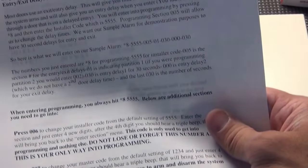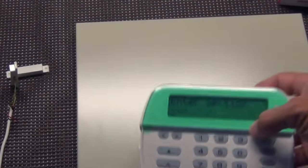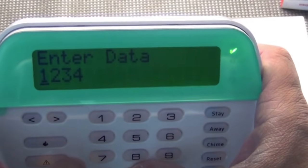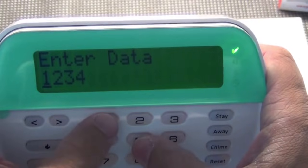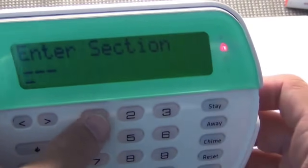We can set our master code, which I want to set the master code, which that is section 007. And enter data. By default, you see it's one, two, three, four. I'm going to enter 1555. That is now my new master code.